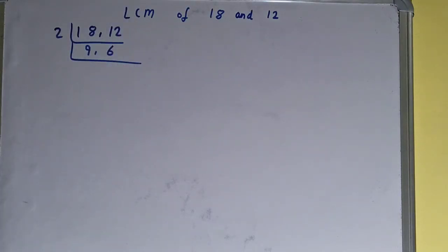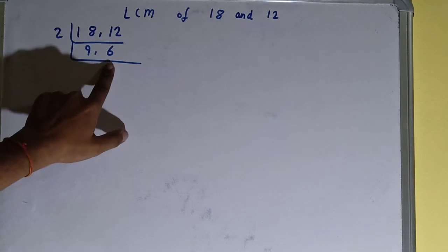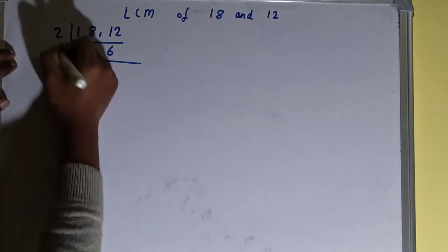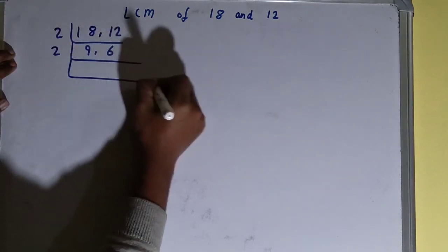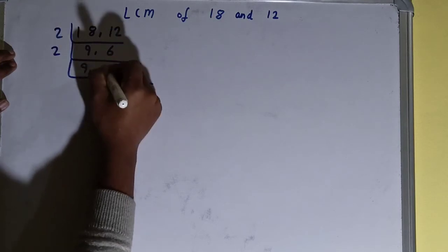Now again, if you check, is any of the numbers divisible by 2? Only the second number is divisible by 2, so we'll divide. The first number is not divisible, so we'll just copy this down, and the second number will become 3.